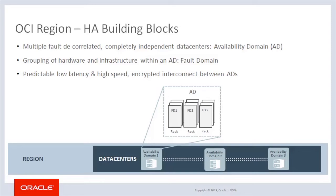Regions are completely independent of other regions and can be separated by vast distances across countries or even continents. A fault domain is a grouping of hardware and infrastructure within an availability domain. Each availability domain contains three fault domains. Fault domains let you distribute your instances so that they are not on the same physical hardware within a single availability domain. A hardware failure or compute hardware maintenance that affects one domain does not affect instances on other fault domains. To control the placement of your compute, bare metal DB system, or virtual machine DB system instances, you can optionally specify the fault domain for a new instance at launch time.